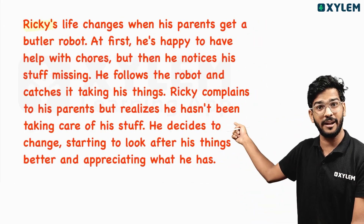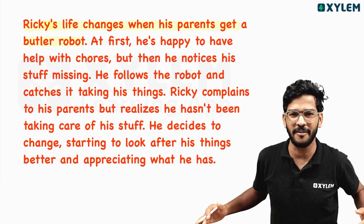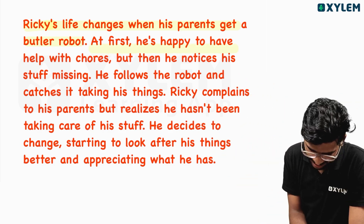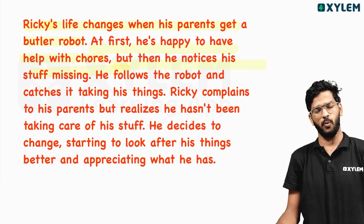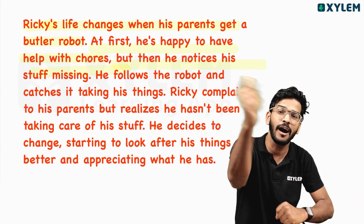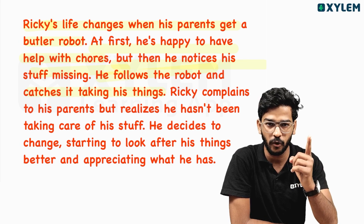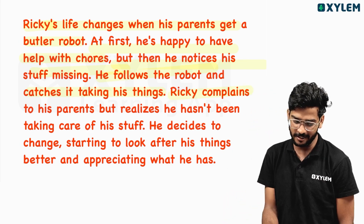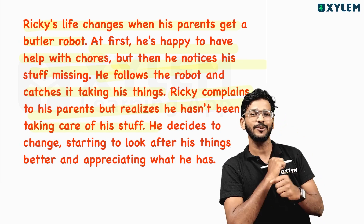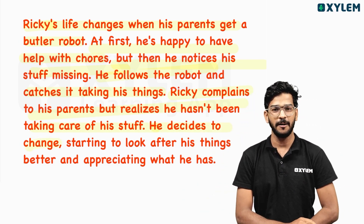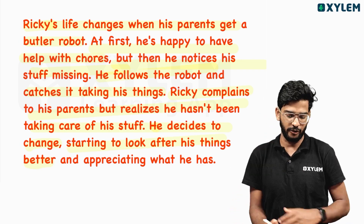Rikki's life changed when his parents got a robot. Of course, he is happy to have help. But then he notices stuff missing. He follows the robot and catches it taking his things. Rikki complains to his parents, but he realizes he hasn't been taking care of his stuff. He decided to change, so he starts to look after his things better and appreciating what he has.